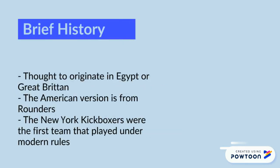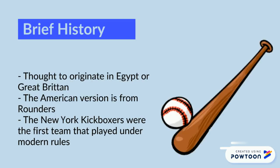The history of baseball is uncertain, although it is thought to originate in Egypt or Great Britain. The American version, which is the one we play in modern times, is from the Rounders, which is an English game. The New York Knickerbockers were the first team that played under the modern rules, and it has really changed since then.